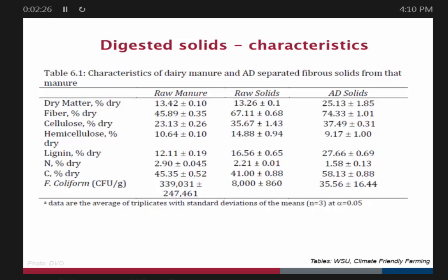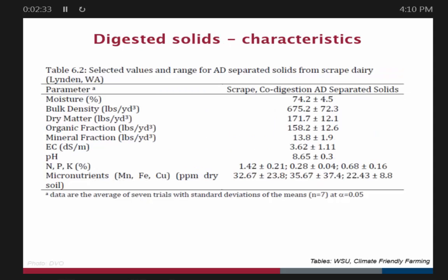This table shows characteristics of digested solids from a particular facility. Notable is the bulk density, which is quite a bit lower than, say, the bulk density of compost, which can be over 1,000 pounds per cubic yard. Fecal coliform as a measure of pathogens is greatly reduced, and that low bulk density has some particular advantage when it comes to bedding.